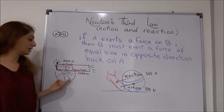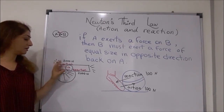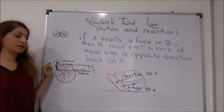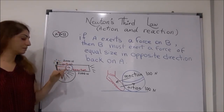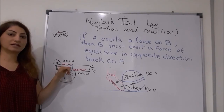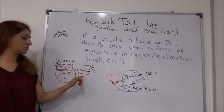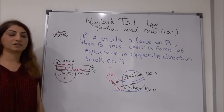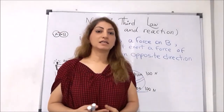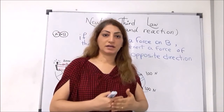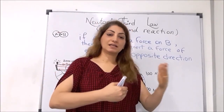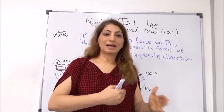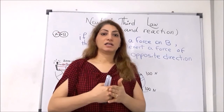Another example: we have a cannon and a cannonball. When it is fired, the cannon shoots the ball and exerts a force of 2,000 N on the ball. The ball also exerts a force in the opposite direction with the same size — 2,000 N — back on the cannon. So Newton's third law states that forces always come in pairs: if an object exerts a force on another object, that object must exert a force back, equal in size and opposite in direction.